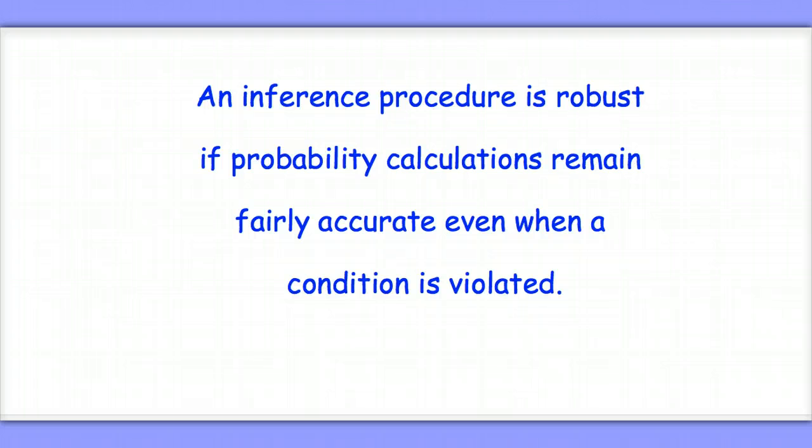In other words, if we construct 95% confidence intervals, then about 95% of the intervals should capture the true value of the population parameter.